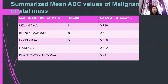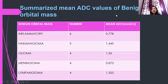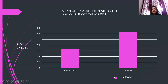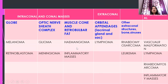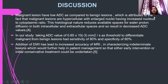This table includes all the malignant orbital masses in my study with their mean ADC values, the lowest being that of retinoblastoma. This bar graph shows the mean ADC of malignant and benign orbital masses. This chart shows the compartmental distribution of orbital masses into intraconal, conal, extraconal, and multicompartmental. Now, discussion: malignant lesions have low ADC compared to benign lesions, which is attributed to the fact that malignant lesions are hypercellular, with enlarged nuclei having an increased nucleus-to-cytoplasm ratio.